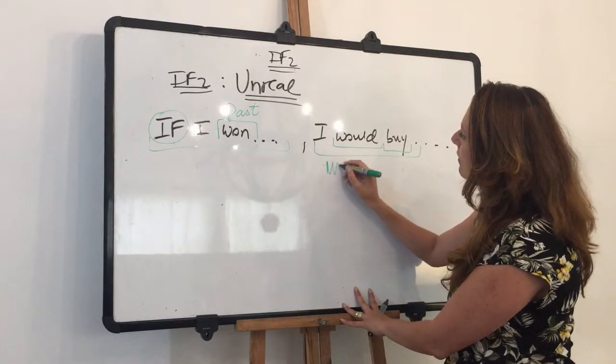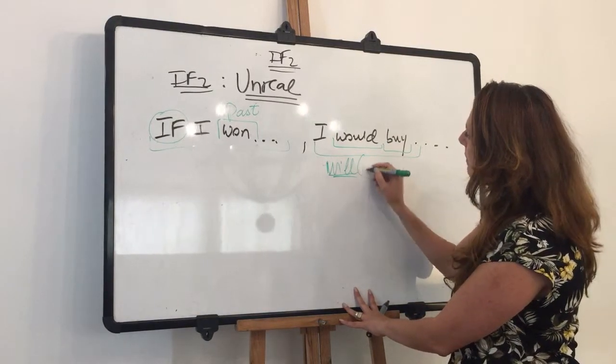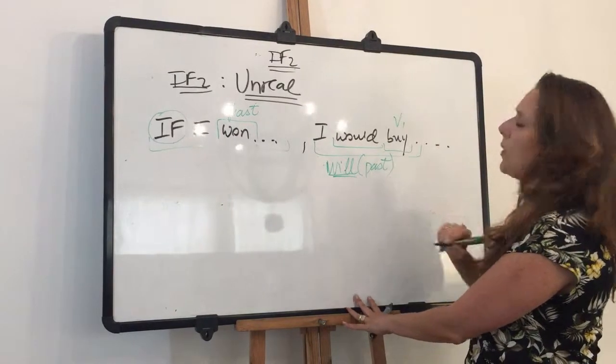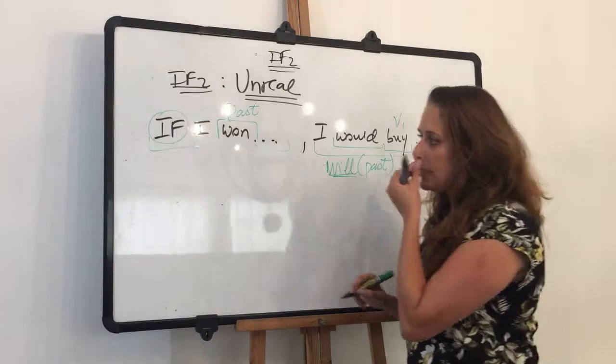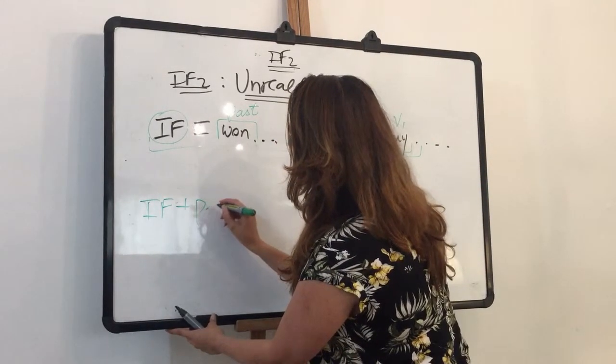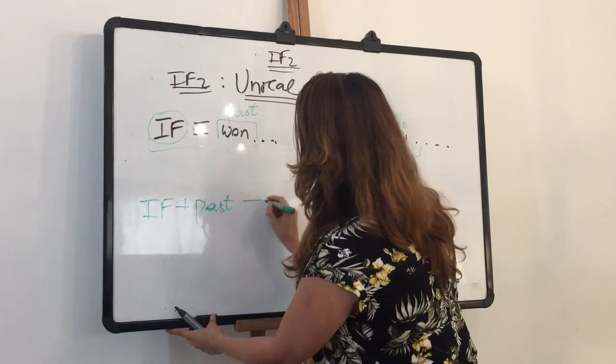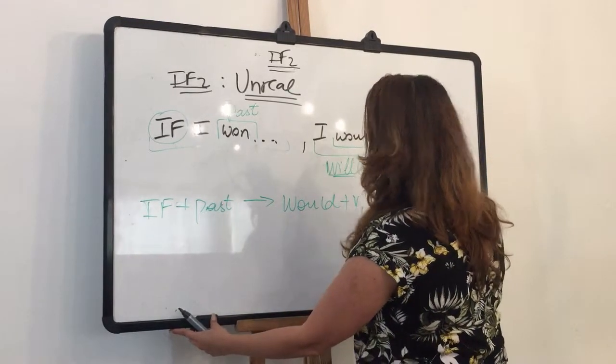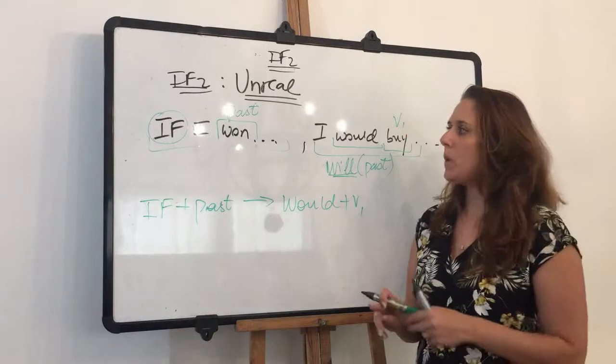The past of will would be would. And the base verb. So the structure would be if plus past simple, would plus base verb. Okay?